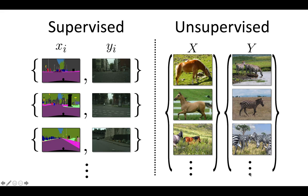In this setting, the only thing we know is a collection of images from domain X and a collection of images from domain Y. The algorithm needs to figure out the correspondence and learn the mapping at the same time.